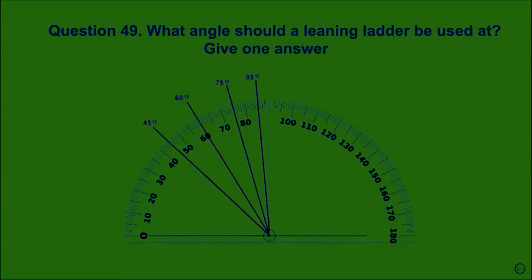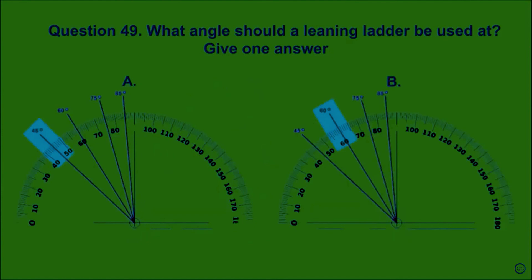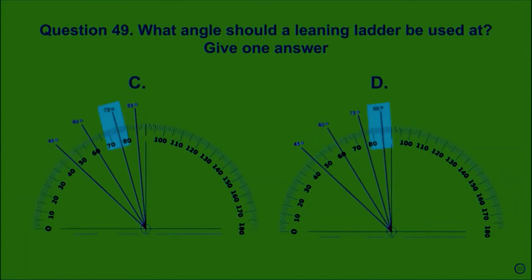Question 49: What angle should a leaning ladder be used at? Give one answer. A, B, C, D. The correct answer is C.